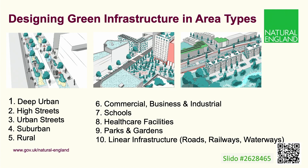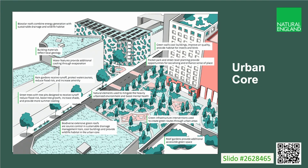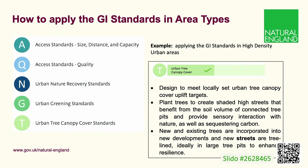Moving on to the area types, these really mirror what is provided by the National Model Design Code, going from the centre of cities through to rural areas, with one or two specialist land uses looked at as well. For instance, high streets — we're going to have greener high streets with more trees, sustainable drainage and so on. The urban core, where we're going to see a lot more vegetation on buildings. For each of these there are links back to the standards so you can see how those would be applied in each case, which is a very useful feature of the guidance.